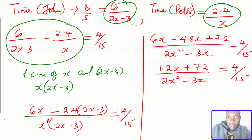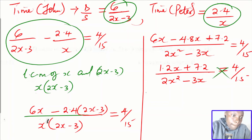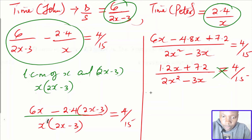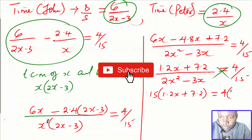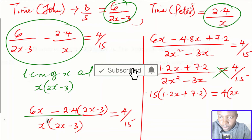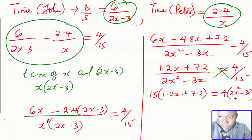Cross-multiplying: 15 multiplied by (1.2x + 7.2) equals 4 multiplied by (2x² − 3x).